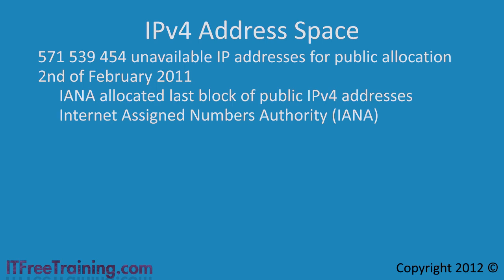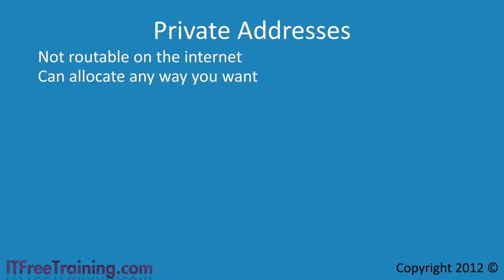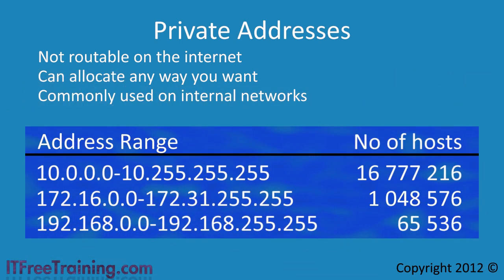So let's have a close look at how IP addresses are allocated, starting with private addresses. Private addresses are IP addresses that are not routable on the internet, meaning you are free to allocate them any way you want. Companies commonly use these on their internal network. The first type starts with 10, giving you just over 16 million hosts. The second starts with 172.16 through 172.31, giving just over 1 million hosts. The last private address starts with 192.168, giving you just over 65,000 hosts.